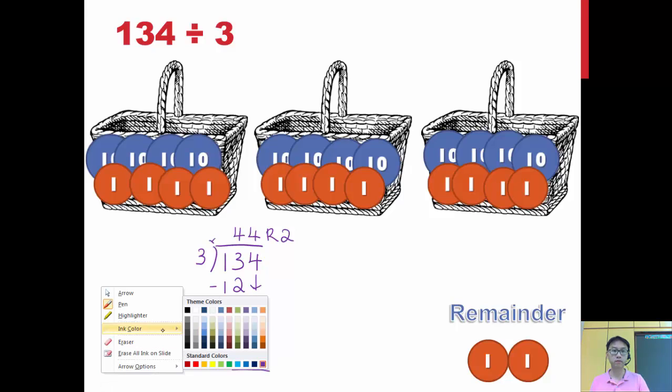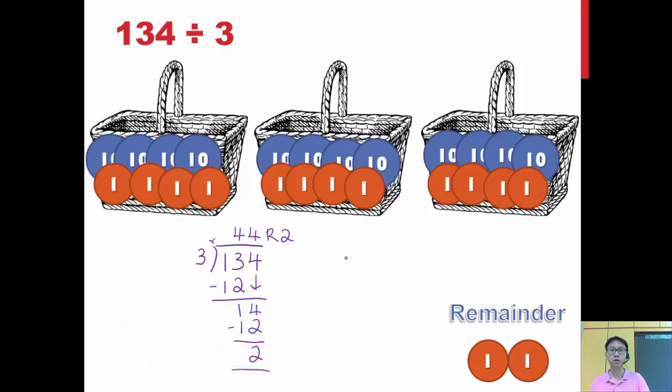Now how do I check? You check by taking 44 times 3 again. So 3 times 4, 12. 3 times 4, 12 plus 1, 13. But you need to add your remainder. So 132 plus my remainder 2 gives me 134. So I'm correct.